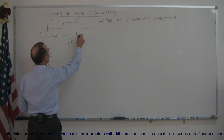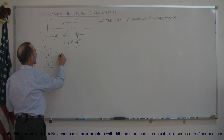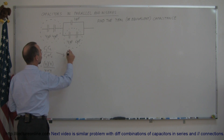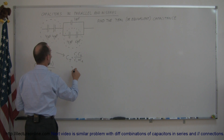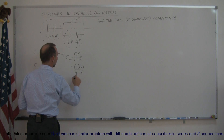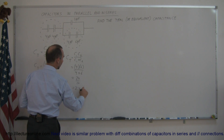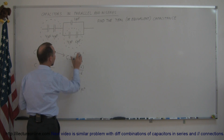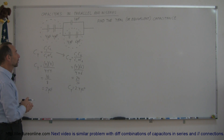We do the same with the second pair of capacitors — they're also two in series. C total equals C1 times C2 over C1 plus C2, which is 4 times 6 over 4 plus 6, giving us 24 over 10, or 2.4 microfarads. So these two capacitors in series can be replaced by a single capacitor of 2.4 microfarads.